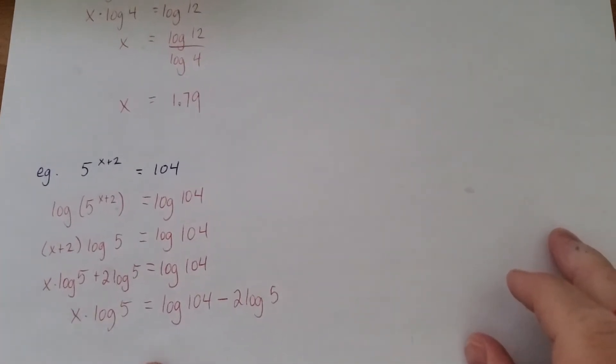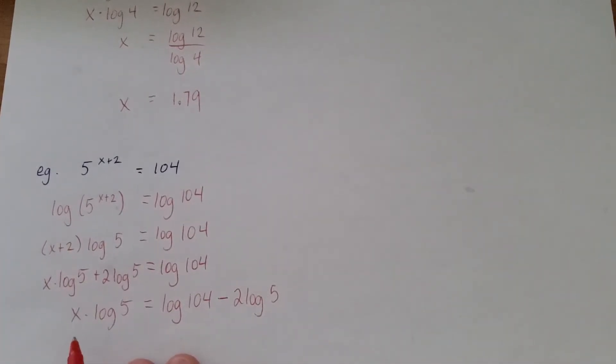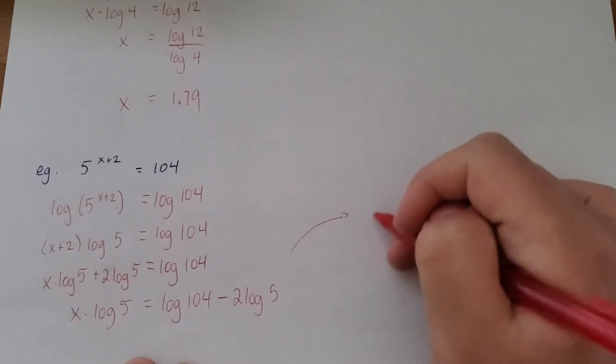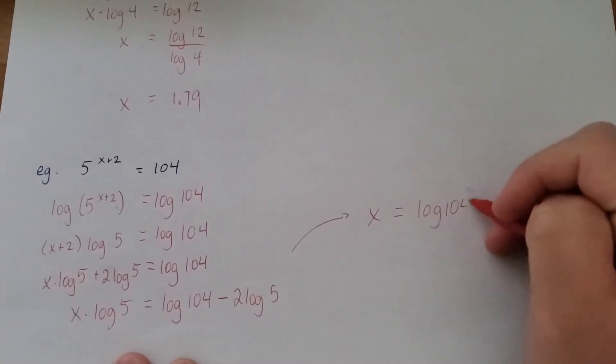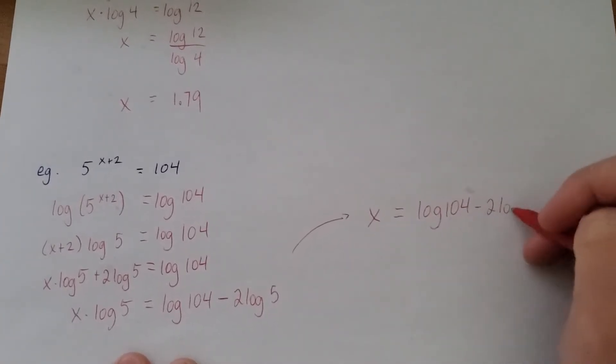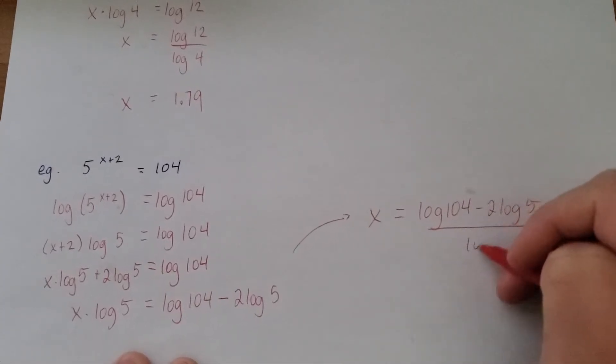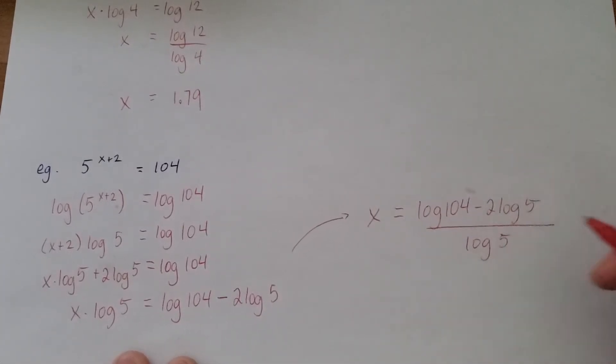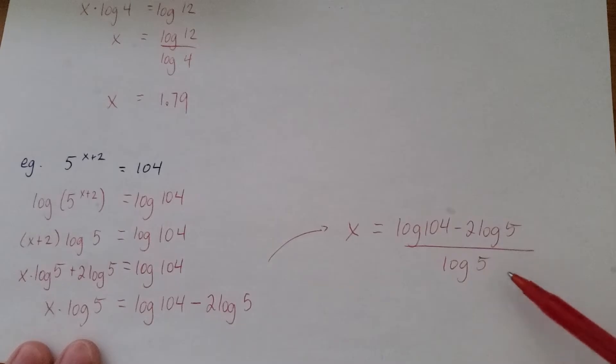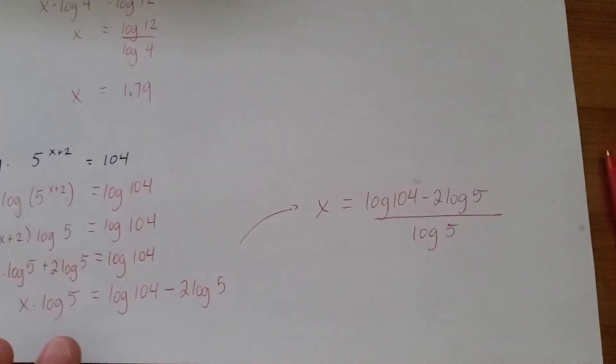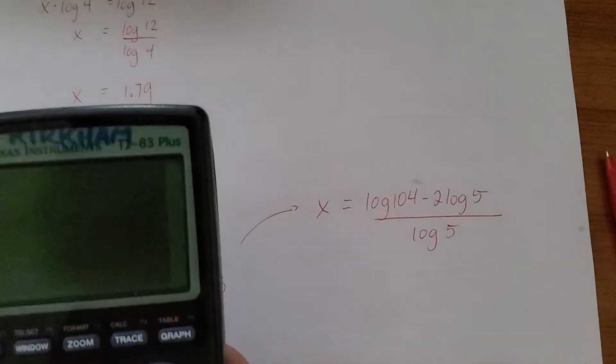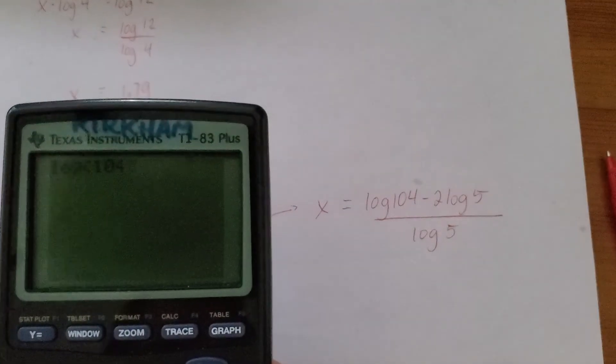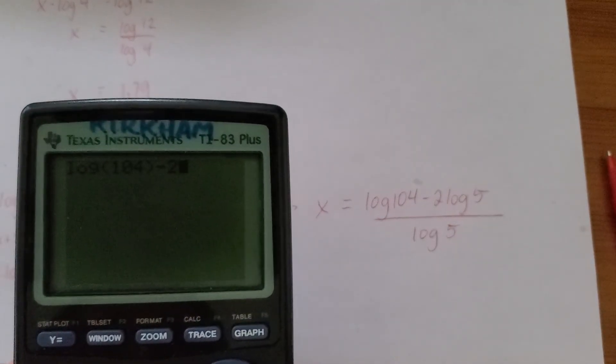Just one last thing to do. To get x by itself, we just have to divide both sides by log 5. And again, getting this expression, I think, is the most important thing. So there's different ways you'd be able to get the decimal answer.